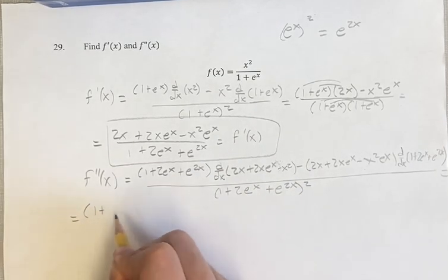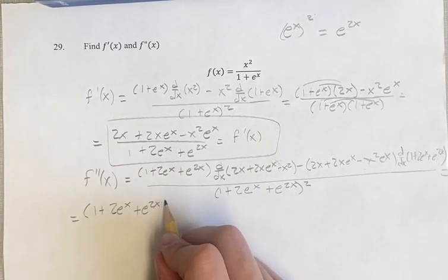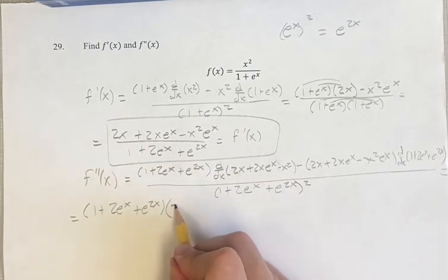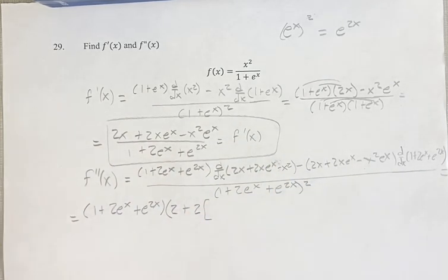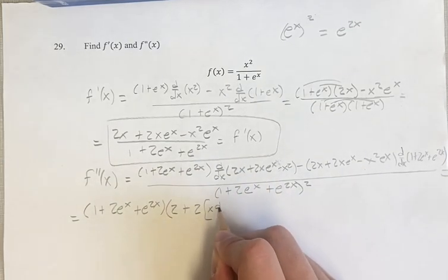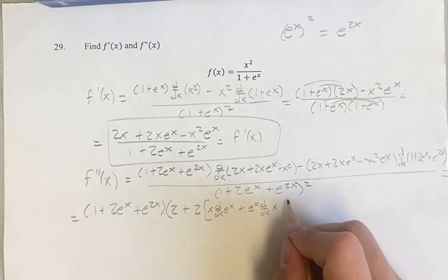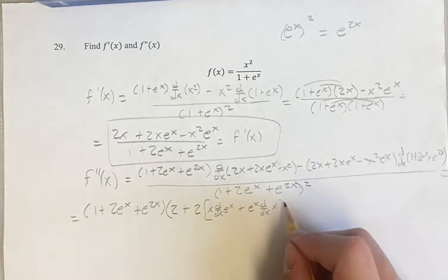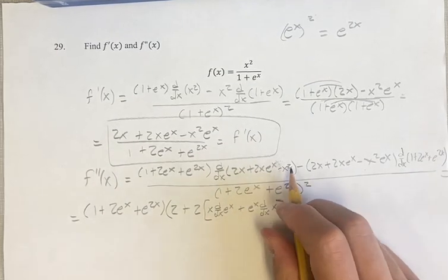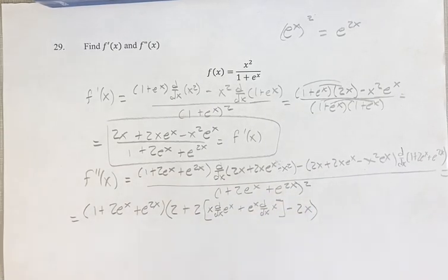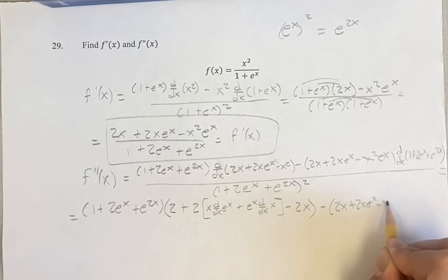So we get (1 + 2eˣ + e^(2x)) times the derivative of the numerator. The derivative of the linear term 2x has coefficient 2, which is just 1 here. Plus 2 times — we have an x·eˣ term, so we need to use the product rule: first times the derivative of the second (x times eˣ), plus the second times the derivative of the first (eˣ times 1). Minus the derivative of x², which brings down the exponent giving 2x.